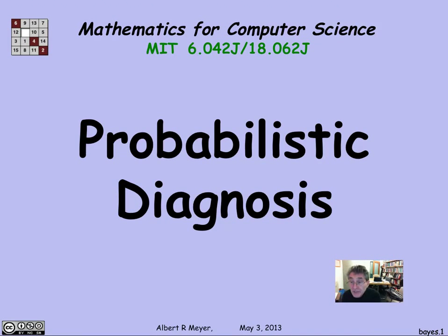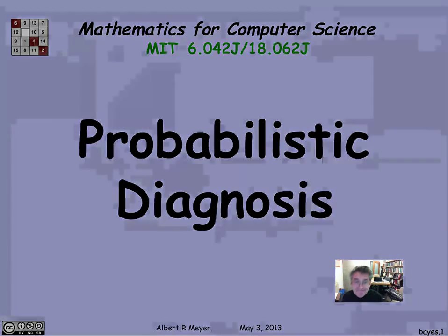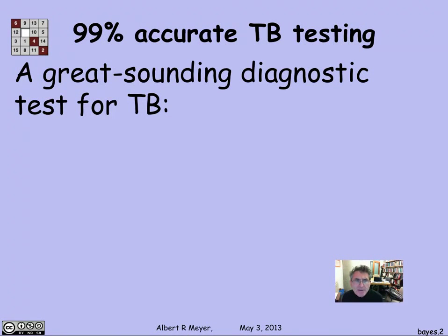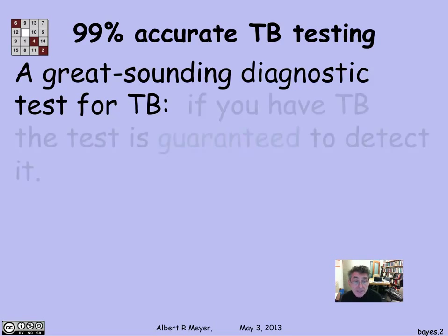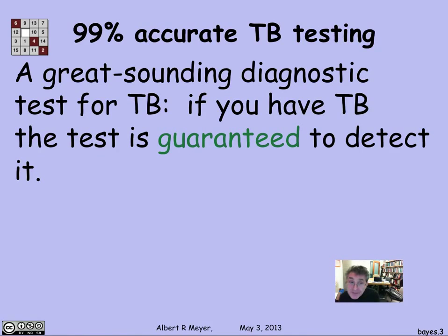One of the most important applications of conditional probability is in analyzing the results of diagnostic tests of uncertain reliability. Let's look at a fundamental example. Suppose I have a diagnostic test for tuberculosis — it sounds great because it's going to be 99% accurate, in fact more than 99% accurate. Here are the properties: if you have TB, this test is guaranteed to detect it and say you have TB.